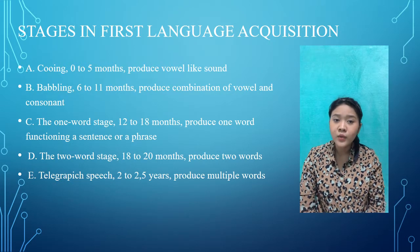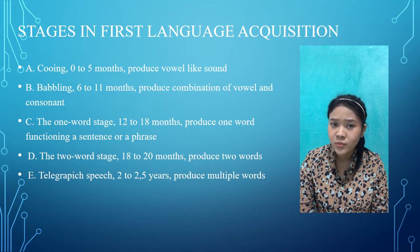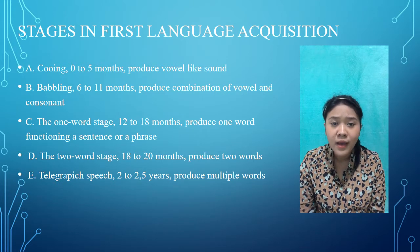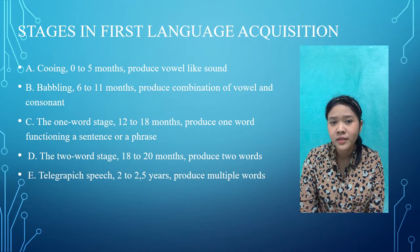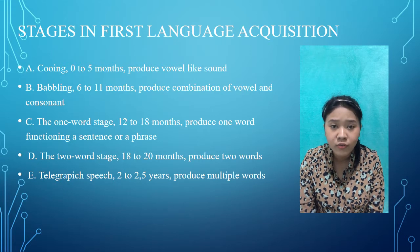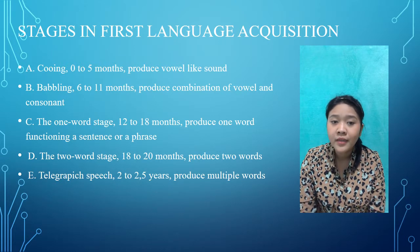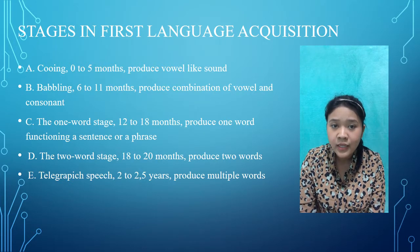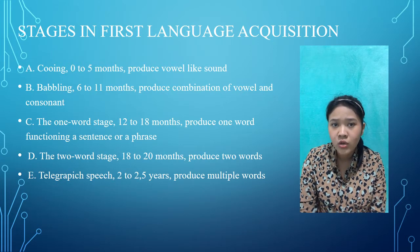The second stage is babbling, occurring between 6 to 11 months, where children produce combinations of vowels and consonants such as 'ba-ba-ba' and 'ga-ga-ga'. Later, there are identifiable intonation patterns to the consonant and vowel combinations, such as 'ba-ba, dada'.